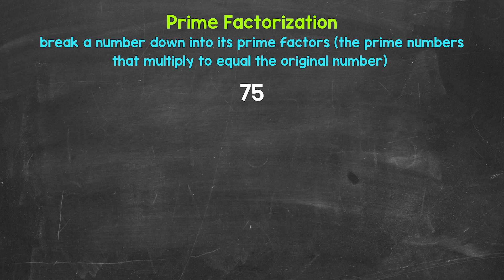So taking a look at 75, we need to start breaking this down by thinking of two factors, two numbers that multiply to give us 75.